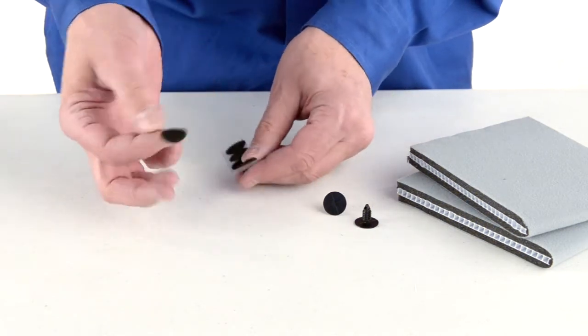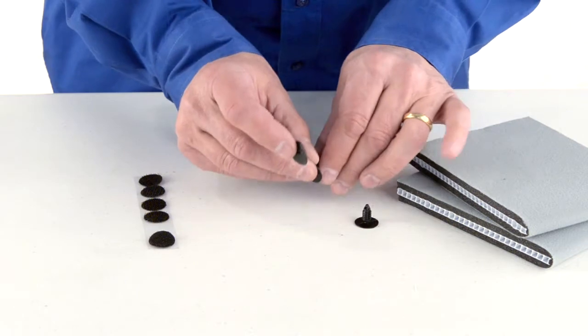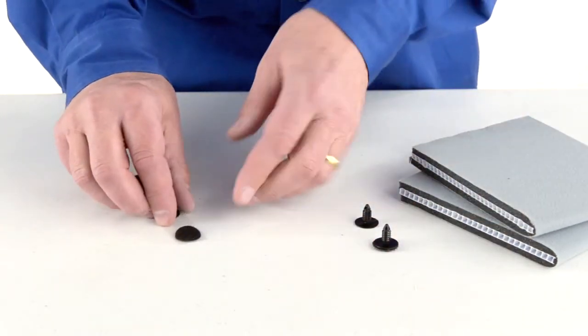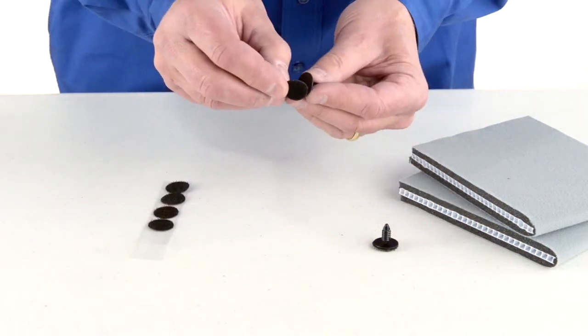So what I'm going to do is take one of the adhesive dots, put it onto the sticky pin, the other adhesive dot onto the other sticky pin.